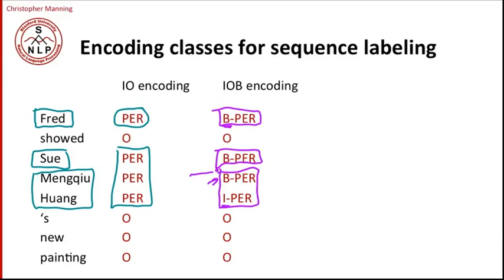So the IOB encoding isn't deficient and solves this problem. It comes at a bit of a cost. Because if we suppose that we have C entity classes, for IO encoding you need to have C plus one labels. Whereas for IOB encoding, you have to have two C plus one labels. And the plus one's coming from the other, for which you don't need to distinguish the BI even on IOB encoding.